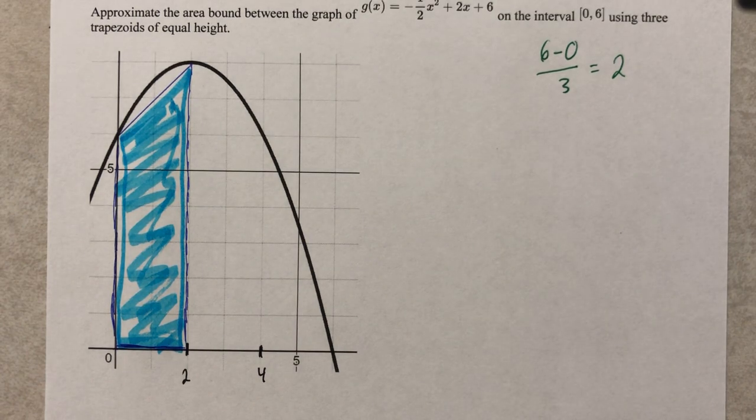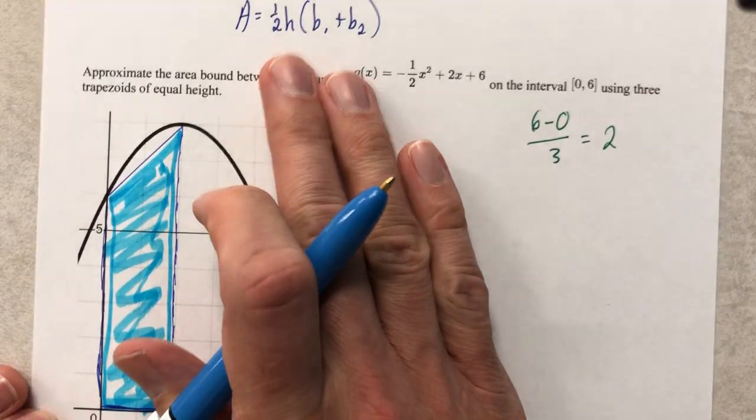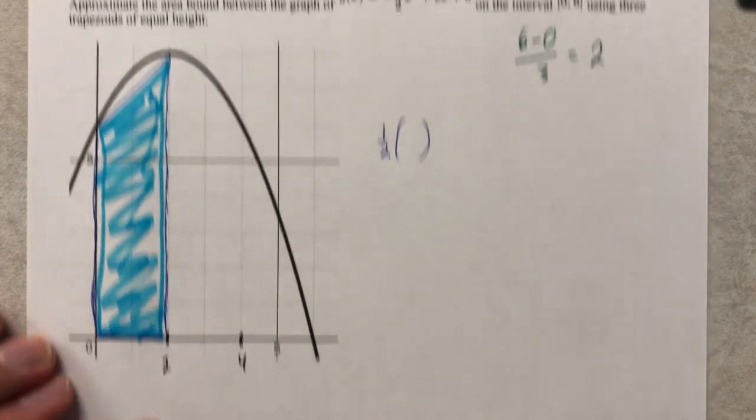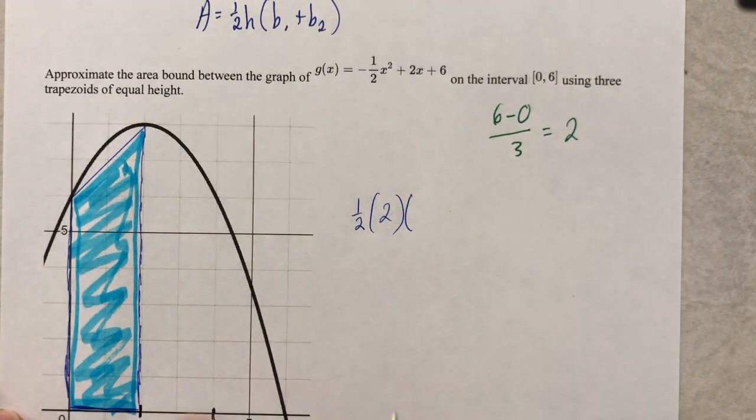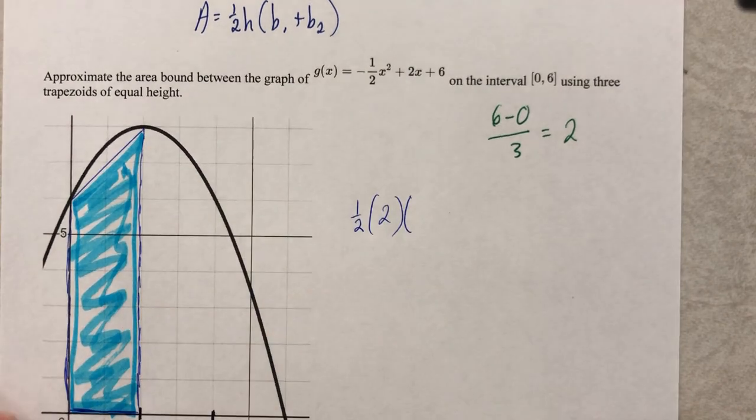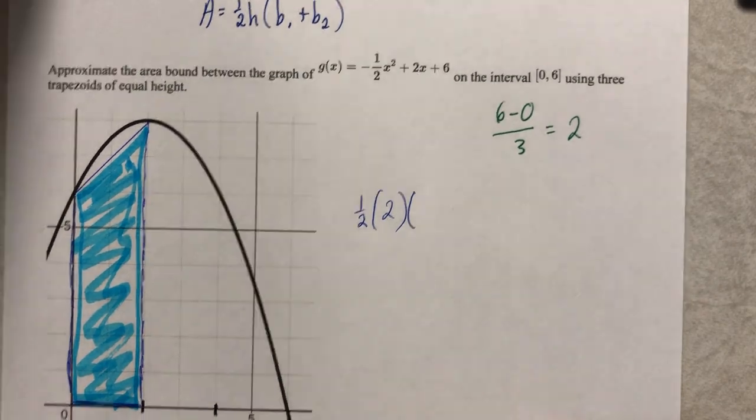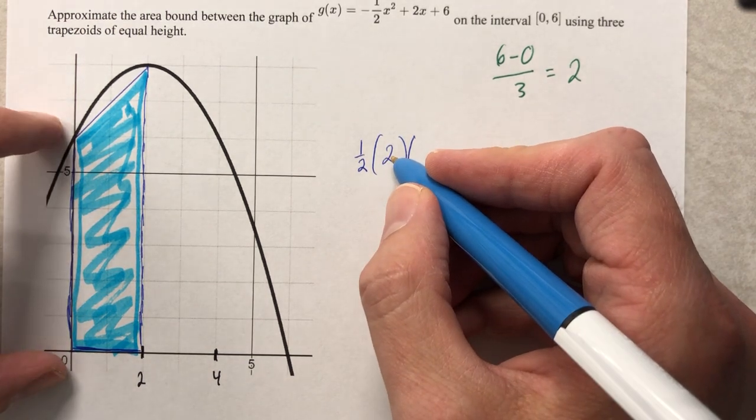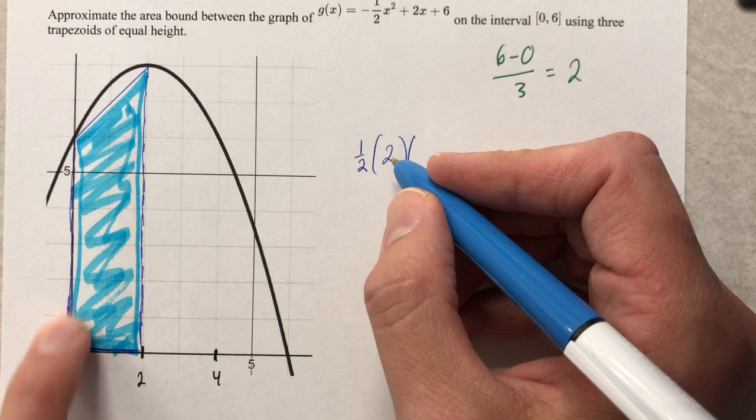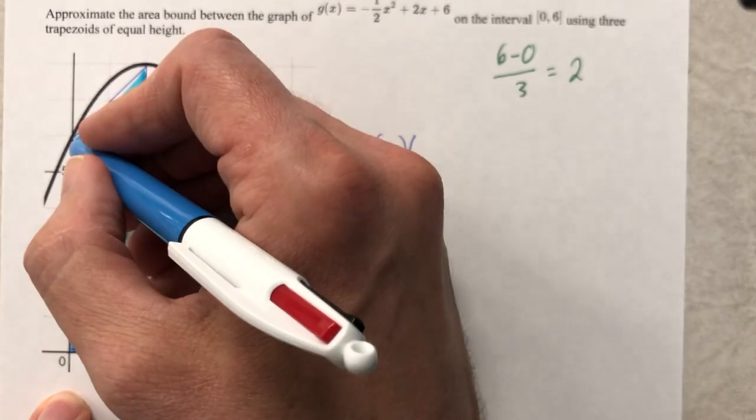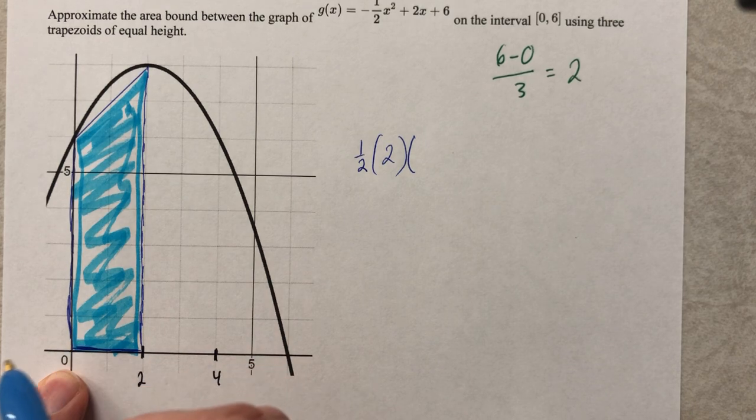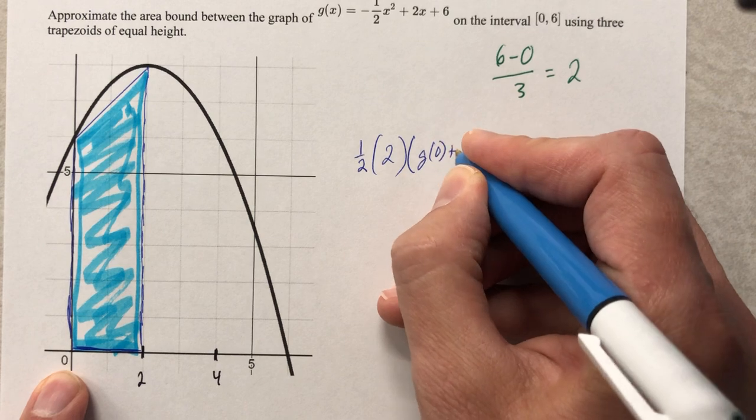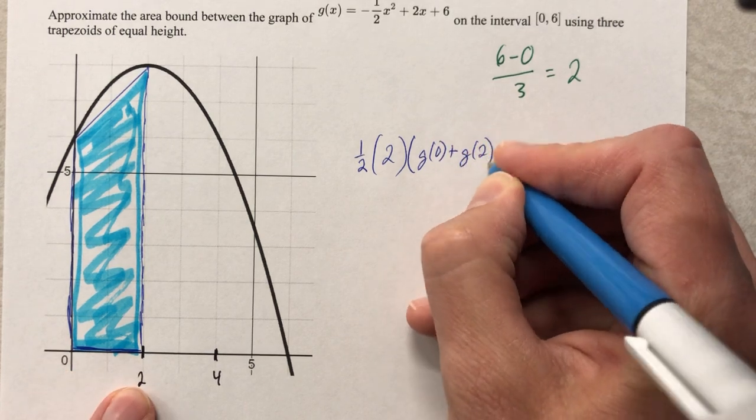Let's write a formula for that. The formula for this is going to be one-half, height. Let's play this game instead. The height of the trapezoid is two. The first base is at g of zero. The length of the base is g of zero. It is the value of the g function with an x value of zero. So it's g of zero, then plus g of two. There's first one.